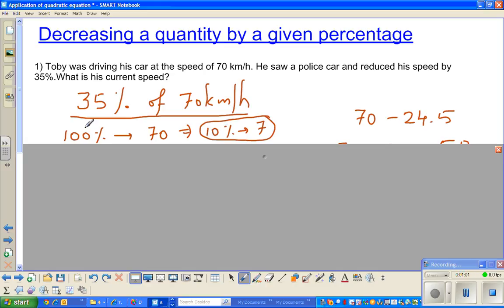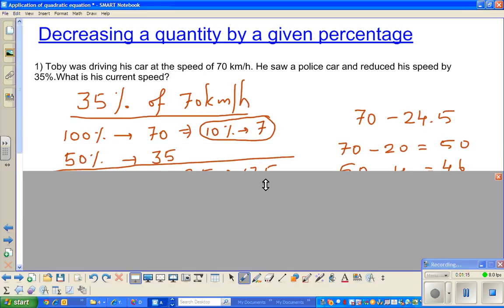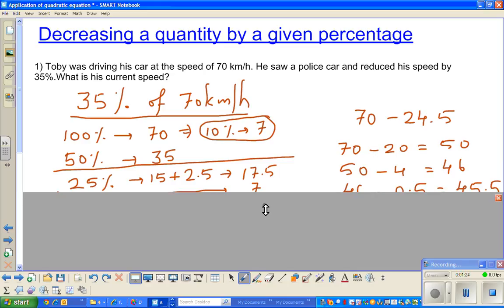100% has 10 10%s. If 100% is 70, 10% would be 7. We're going to use this later. Listen to my argument. If 100% is 70, 50% would be half of 70, which is 35. If 50% is 35, 25% would be half of this. I've done it in two steps: half of 30 is 15, and half of 5 is 2.5, so half of 35 is 17.5.